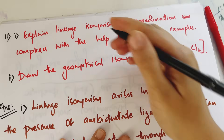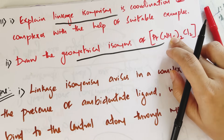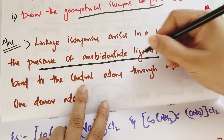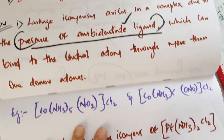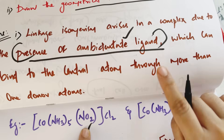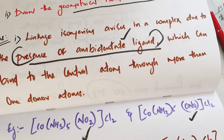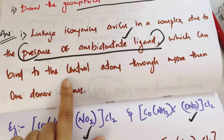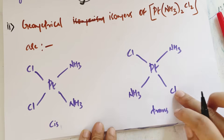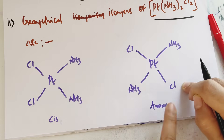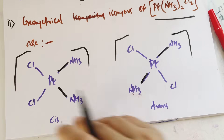Explain linkage isomers with an example. Linkage isomers and geometrical isomers arise in coordination compounds. Linkage isomers occur due to the presence of ambidentate ligands, which can bind to the central atom through different donor atoms.